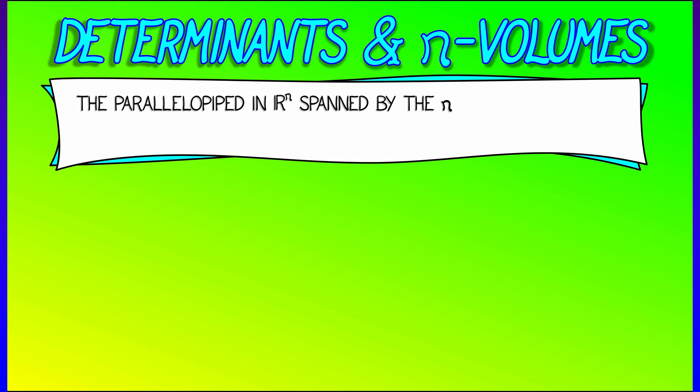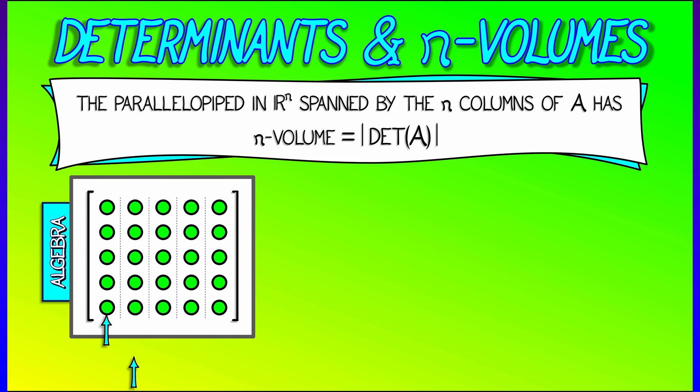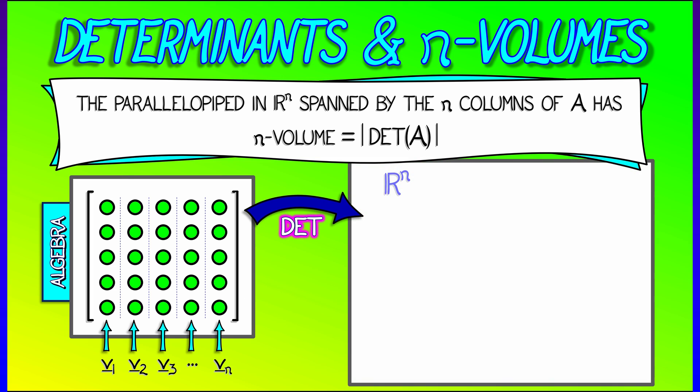I claim that if you look at the parallelepiped in n-dimensional space that is spanned by the n columns of an n by n matrix A, then this has n-dimensional volume equal to the determinant of A in absolute value.